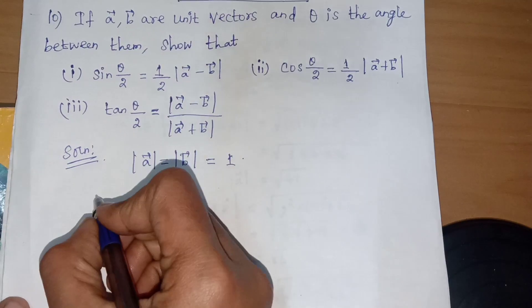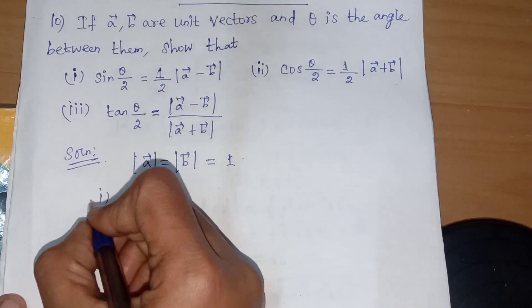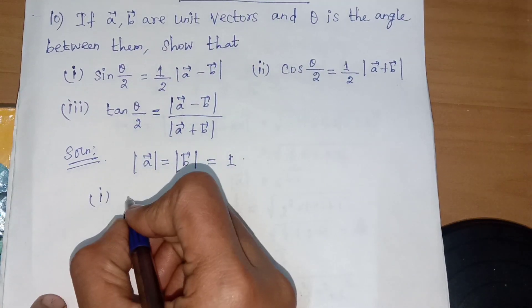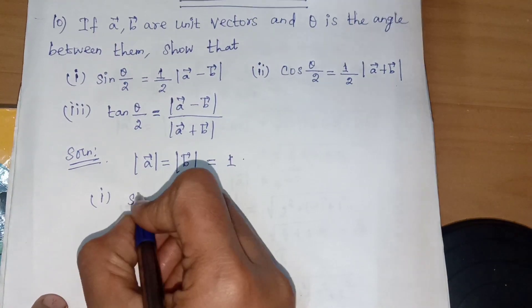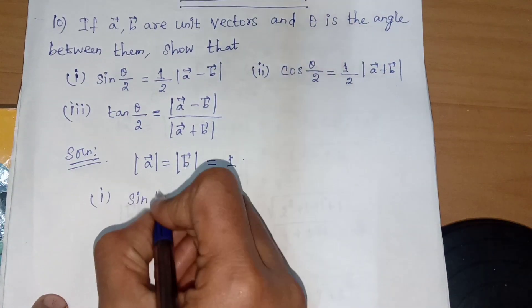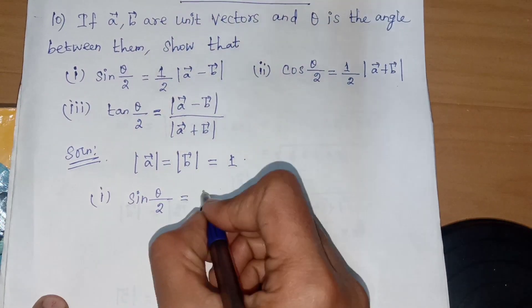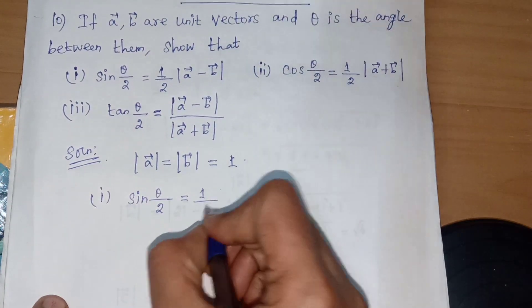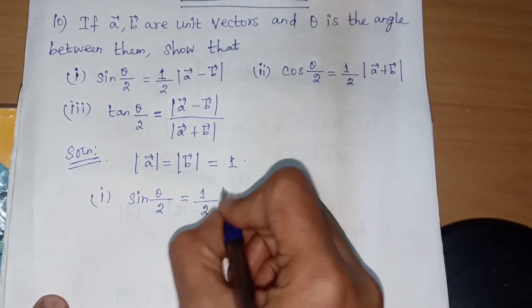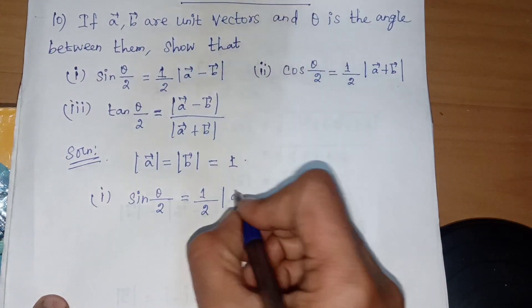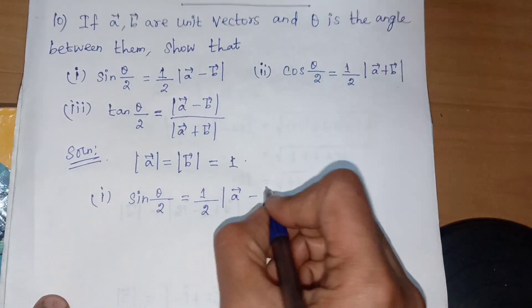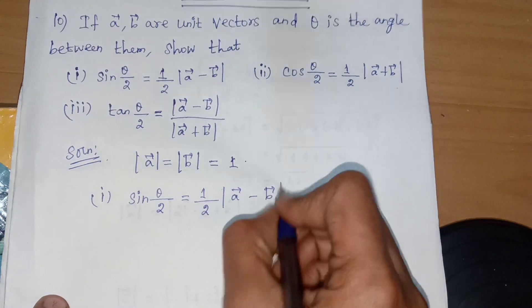First subdivision: prove that sin(θ/2) equals half times |A vector minus B vector|.